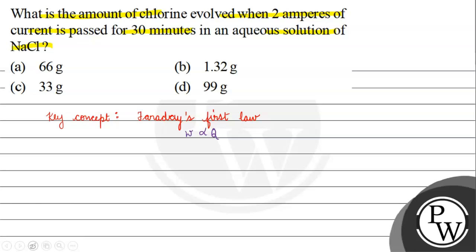Now, in the question, we have to find the amount of chlorine evolved. The current is 2 amperes and the time given is 30 minutes. We'll convert 30 minutes into seconds: 30 times 60 seconds equals 1800 seconds.